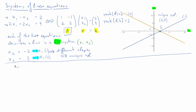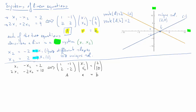Let us now look at a different scenario — a different two-dimensional system with two equations represented in matrix algebra form. If we look at matrix A and try to figure out its rank, we can quite quickly see that the second column is related to the first column. In particular, if we multiply the first column by negative 1, we get the second column. So the second column isn't extra information, and the rank of that matrix is equal to 1.